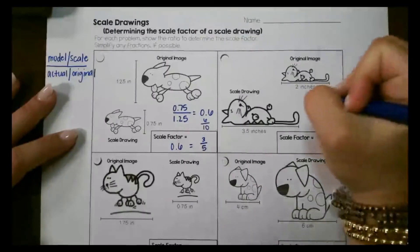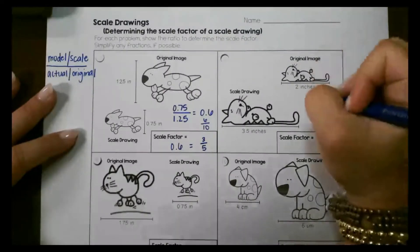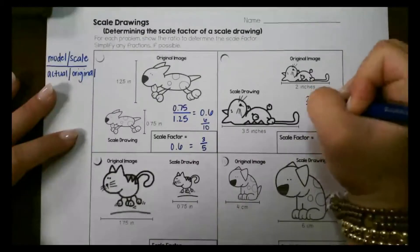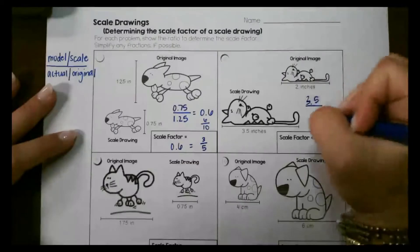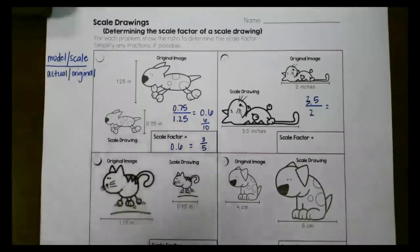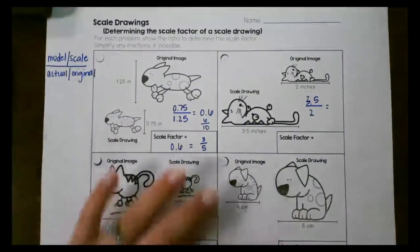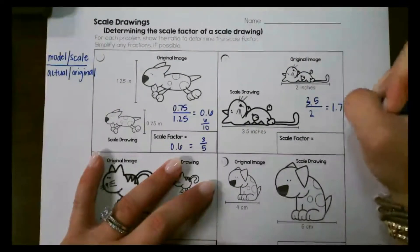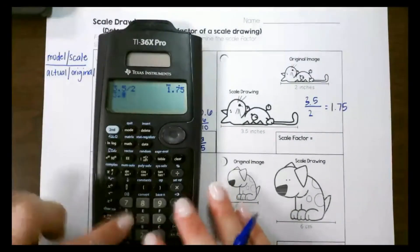Let's look at our next one. Our original this time is 2 and our scale or our model is 3.5 that goes on top and then our original is 2. So again you can set that up. I usually plug it into my calculator 3.5 divided by 2 which is 1.75 or set it up as a fraction in your calculator just like this and then use your fraction conversion button to figure out what the ratio would be.